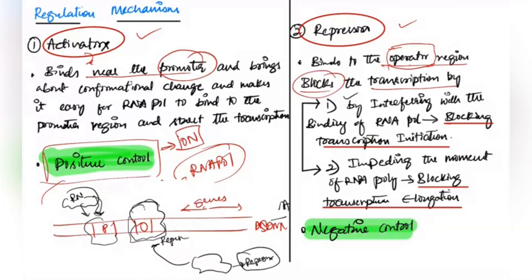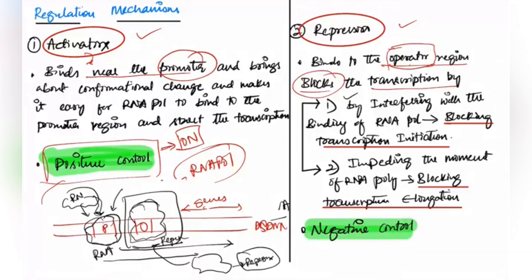Even if RNA polymerase comes and binds to the promoter region, it cannot bypass the operator region because the repressor is present, acting as a block between promoter and operator. Hence it cannot transcribe the genes. This is why it is called negative control — the presence of the repressor switches off transcription.